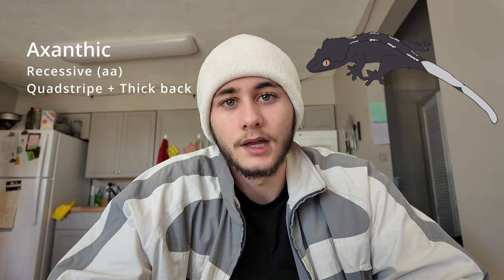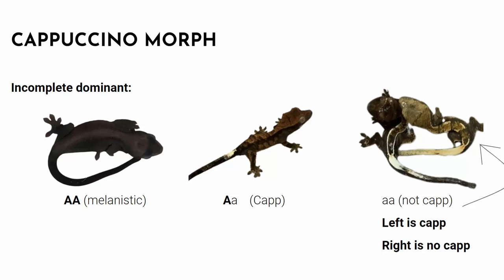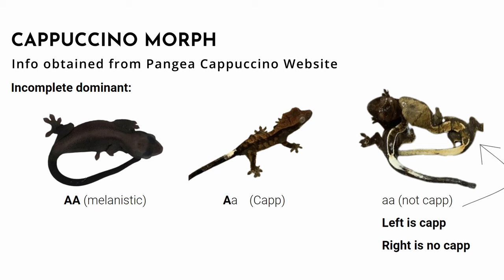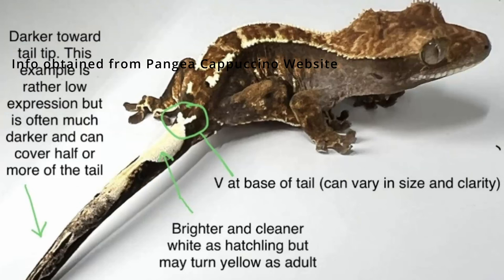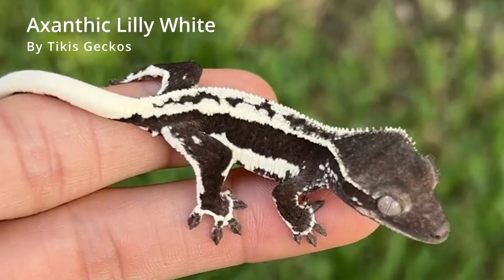The xanthic is recessive and creates a dark crested gecko by eliminating the yellow pigment — it's really cool how xanthophores work. Cappuccino is incomplete dominant, so there is a super form: big A/big A is melanistic (the super form), while big A/small A is different. The way to identify a cappuccino is a little V at the tail with really bright white where the tail starts, fading away, and a dark body. A frappuccino is the combination of a cappuccino with a lily white — a dark crested gecko with nice white contrast — and it's not the same as an xanthic lily white.